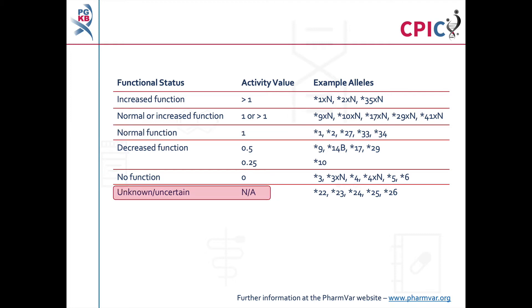Be aware that some CYP2D6 alleles have an unknown or uncertain functional status and should be interpreted with caution on a genetic test. An important caveat for all genotyping tests is that any alleles which are not detected in the assay are designated as star 1. This can include rare increased function, reduced function, and non-functional alleles which are not routinely screened for in some genotyping tests.